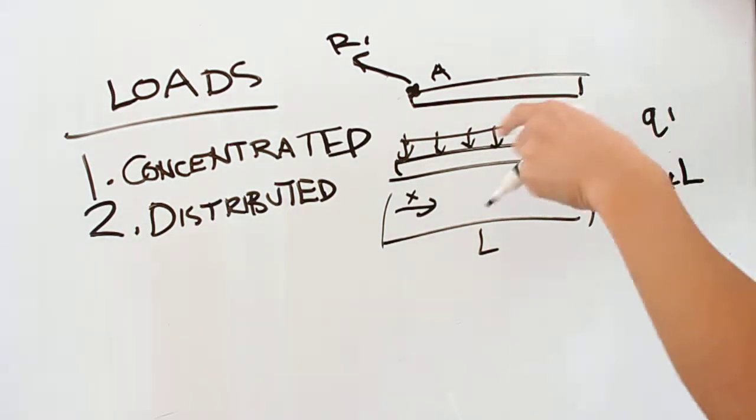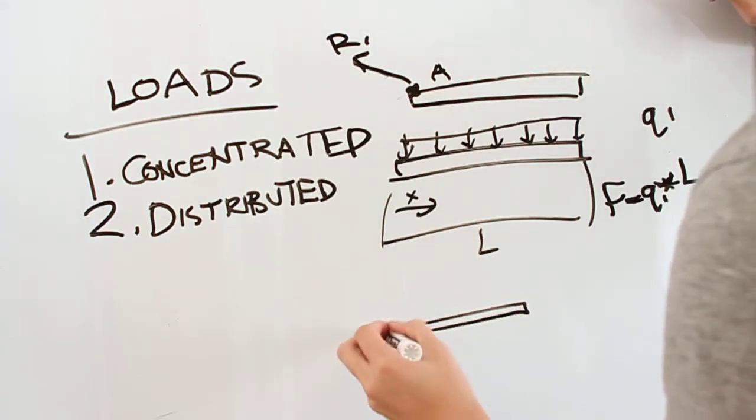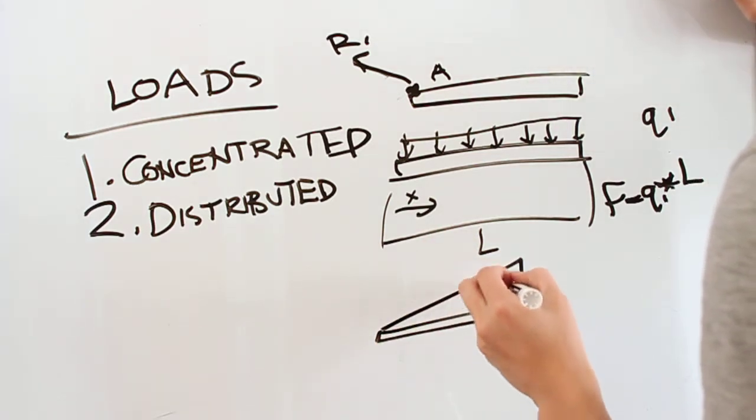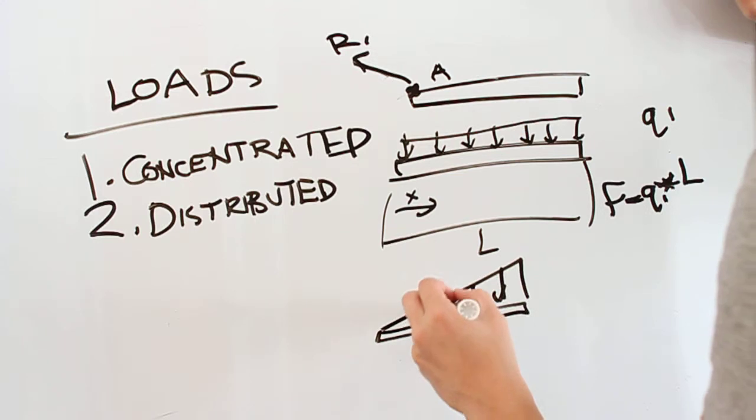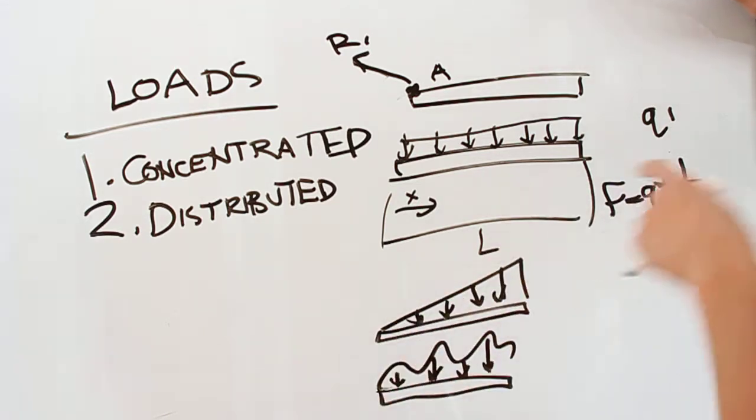And then really that function can change. You can imagine a beam receiving a distributed load like this, where the farther you go out, the more load you get. It could also be something completely random. It doesn't matter. But you'll use that function over a distance L to solve problems.